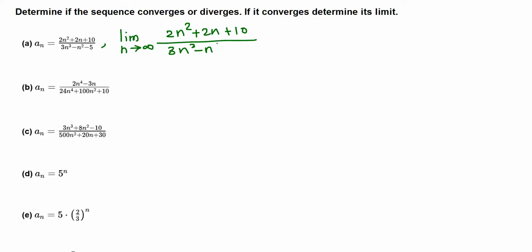This limit is the same as just taking the leading terms: 2n² over 3n³. We can cancel n², leaving 2 over 3n. When n goes to infinity, a number over something very very big gives us 0.